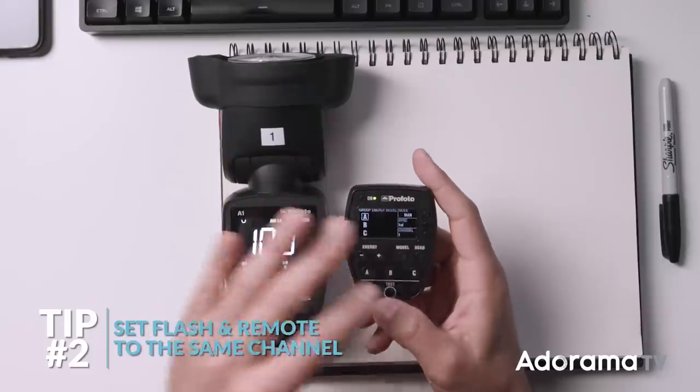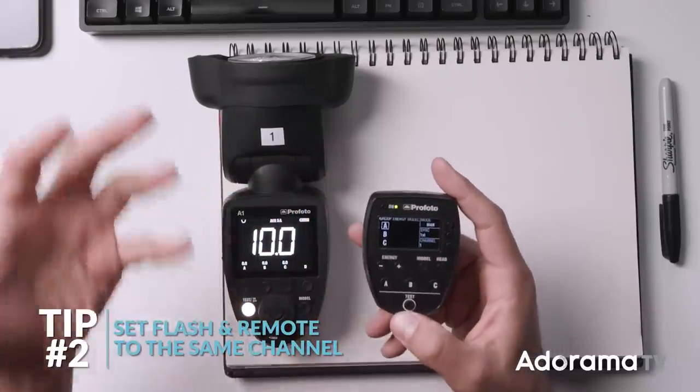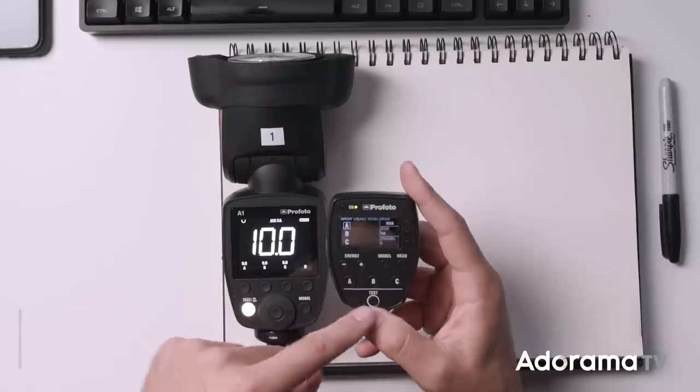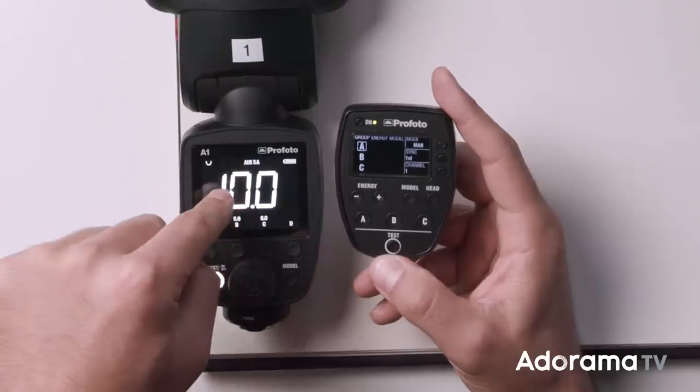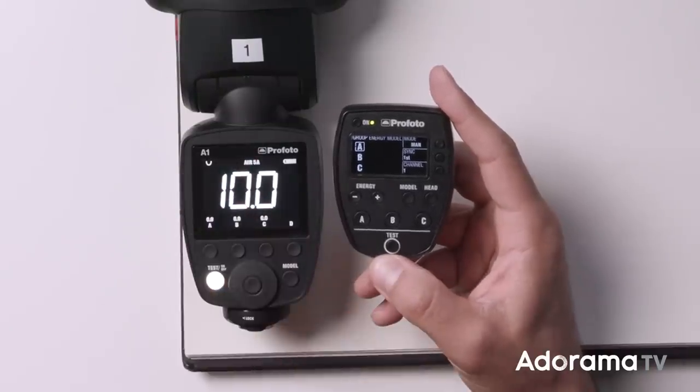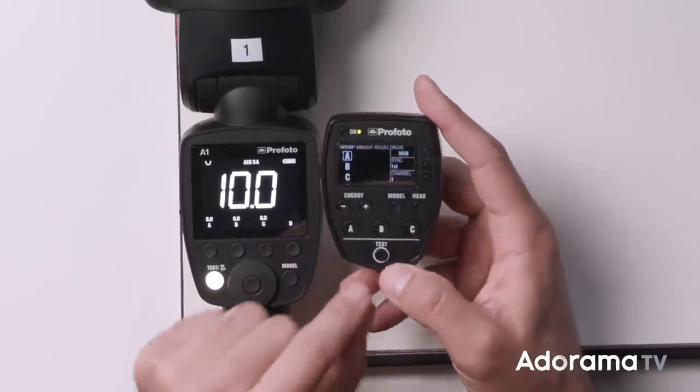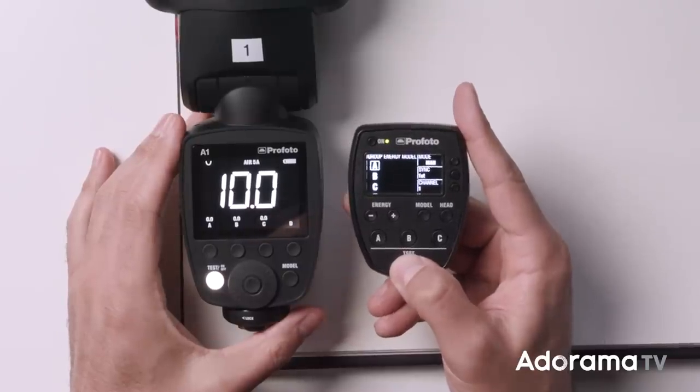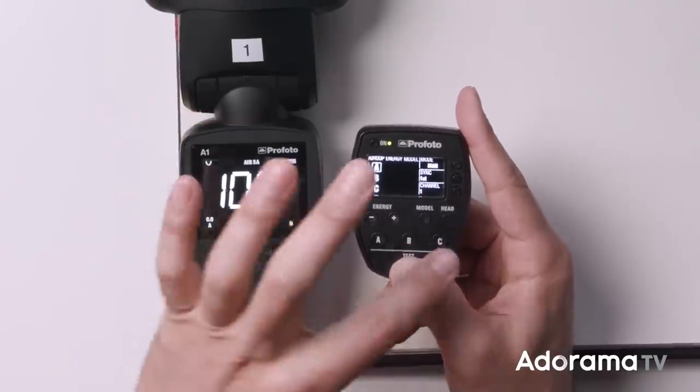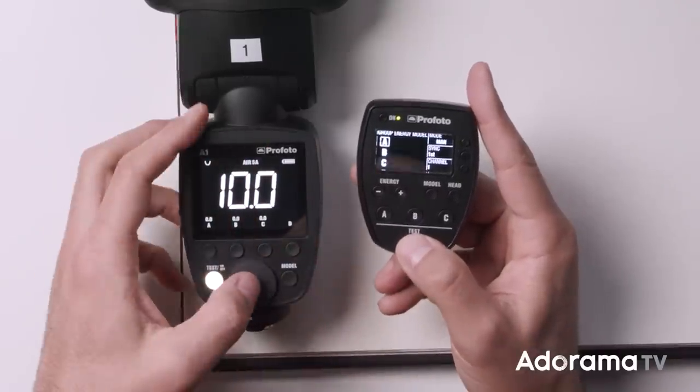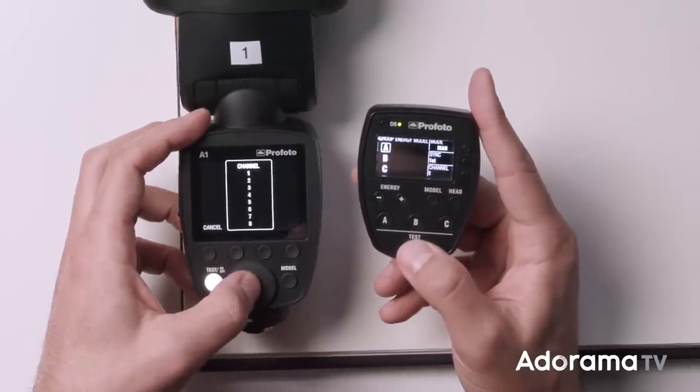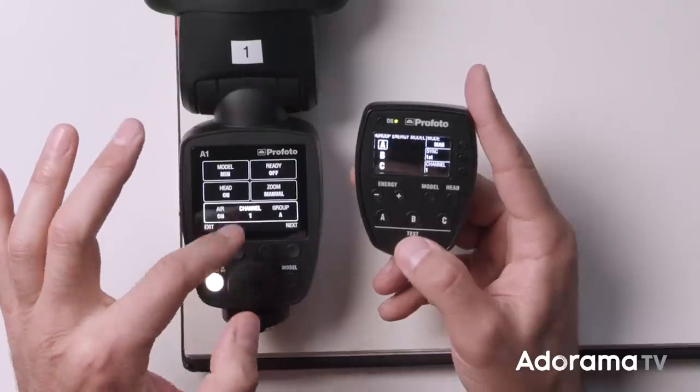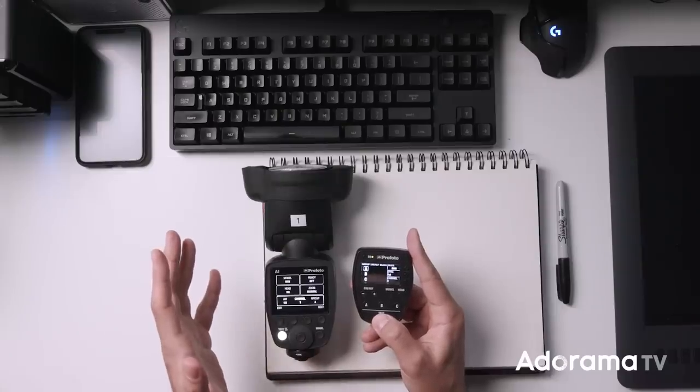Number two, we're going to go to the channel. So if these are not on the same channel, they can't speak to each other. So we want to make sure that the remote and the flash are set currently to channel one. So if we look at the remote, it's actually set to channel five, and then it says A afterwards. A is the group, and we're going to talk about that in just a second. But you'll notice if I press the test button right now, nothing happens because they're not communicating with each other. So what we're going to do is go ahead and go back into the menu, and we're going to select channel, and we're going to go to one. Once these are on the same channel, then if I press test, it's going to pop.